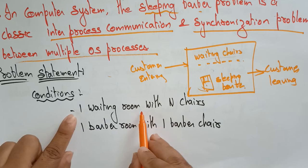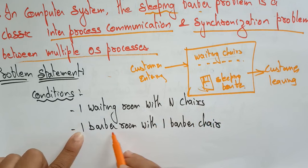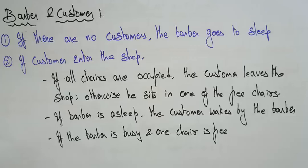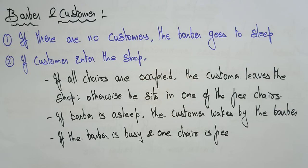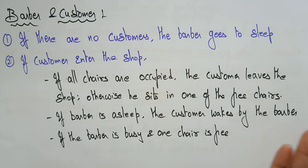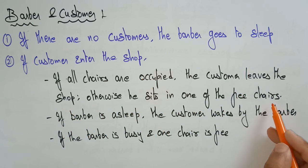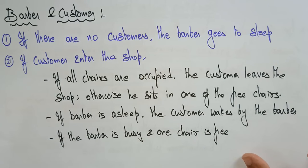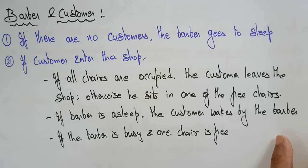The formal conditions are: there is one waiting room with N chairs, and one barber room with one barber chair. If there are no customers, the barber goes to sleep. If a customer enters and all chairs are occupied, the customer leaves the shop. Otherwise, the customer sits in a free chair. If the barber is asleep, the customer wakes him up. If the barber is busy and one chair is free, the customer waits.